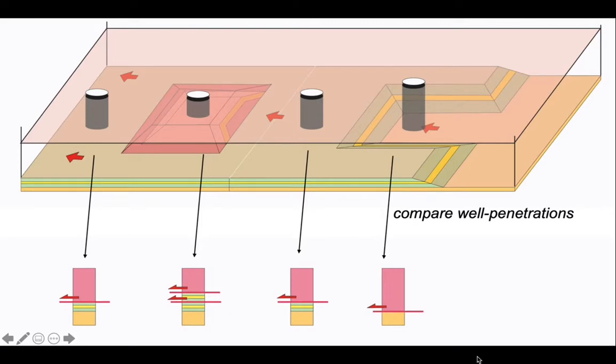Starting on the left we have our pink overriding thrust sheet sitting on the common foot wall running along a thrust flat. Moving right our borehole goes through the overriding thrust sheet then encounters our small horse crossing the upper thrust, then goes through that crossing its lower thrust and then into the common foot wall.